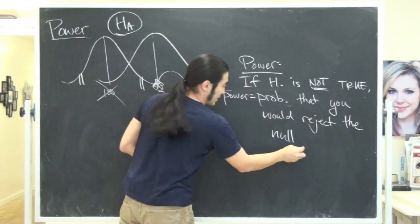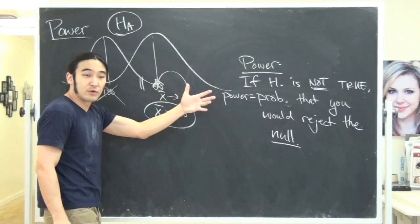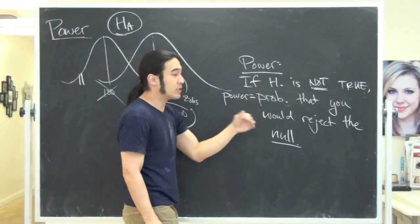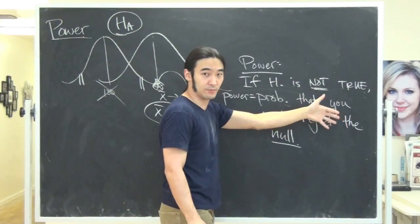So it's not too bad. So if something's going on and the null is not true, then power is the probability you would actually correctly reject the null.